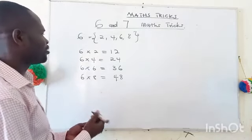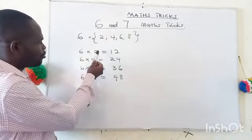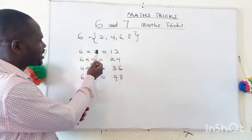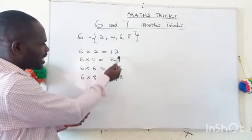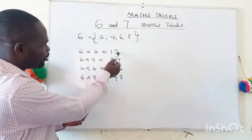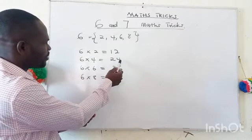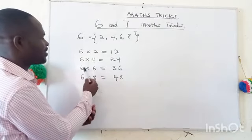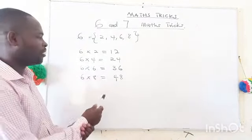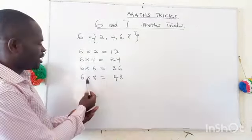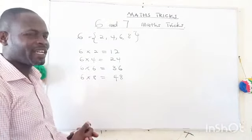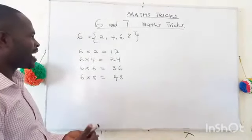When you look at it, you realize that the number you used to multiply with six is repeated there. Six times two — the two is there; six times four — the four is there; six times six — the six is there; and six times eight — the eight is at the end.